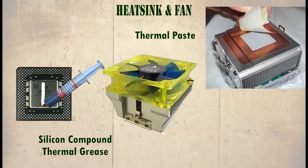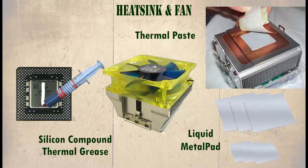An alternative to thermal grease is liquid metal, which claims to melt at very low temperatures and can cause a much better transfer of heat to the heat sink. It comes in a pad form and is applied to the top of the CPU.